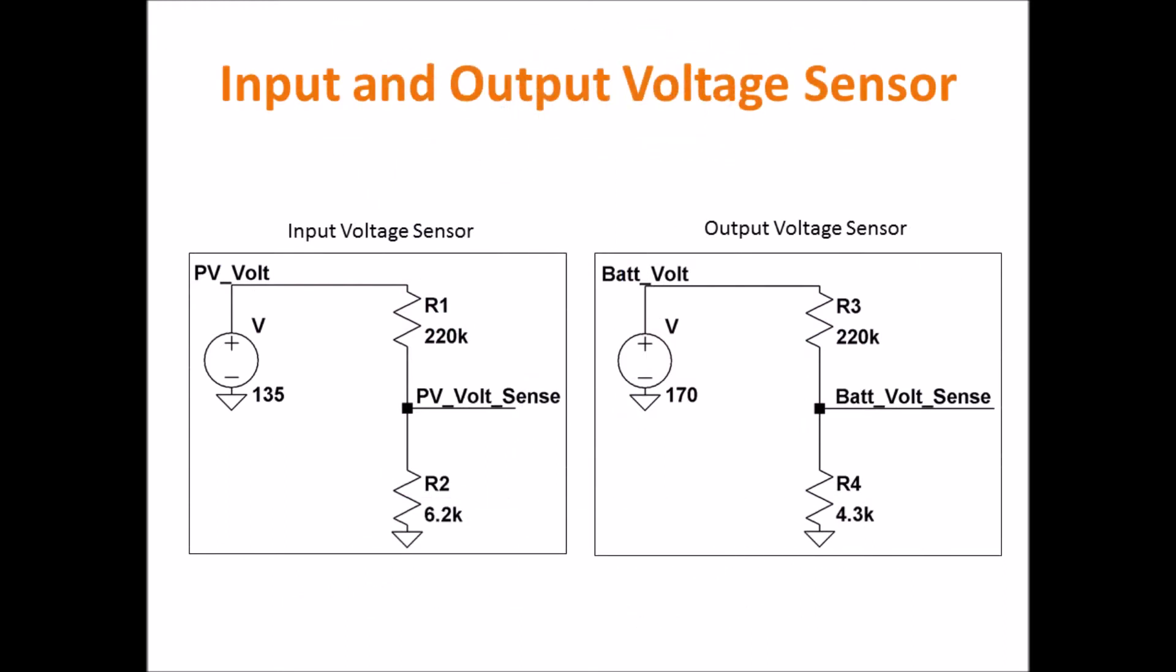Another key component of the MPPT are the voltage and current sensors. These sensors are necessary to ensure that the MPPT's microcontroller can accurately control the pulse width modulation scheme to reach the maximum power point. The first of these sensors are the input and output voltage sensors. These sensors were designed as simple voltage dividers. The simplicity of the design allowed us to closely monitor power loss and to make it easier to modify the sensor's range and sensitivity.